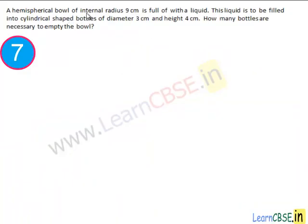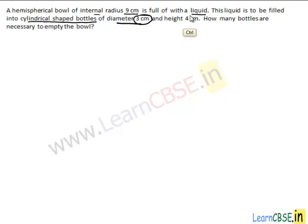In this question, we have given a hemispherical ball of internal radius 9 cm and it is full of liquid. This liquid is used to fill cylindrical shaped bottles where the diameter of the base circle is 3 cm and the height of each bottle is 4 cm. We have to find the number of bottles required to empty the hemispherical ball.